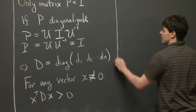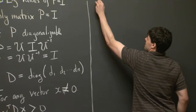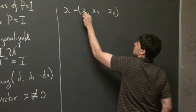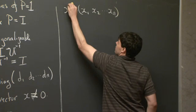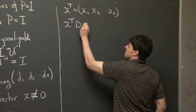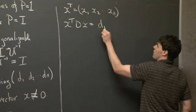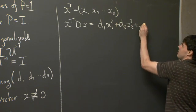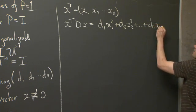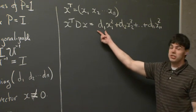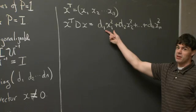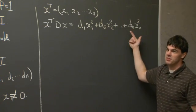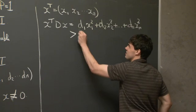If I write x out using components x1, x2, ..., xn, then I can work out the quantity x^T D x, and we see that we get a sum of squares: d1·x1² + d2·x2² + ... + dn·xn². By definition, each coefficient is positive. A product of a positive number with a square is positive, and a sum of positive numbers is also positive. So the whole thing is positive.